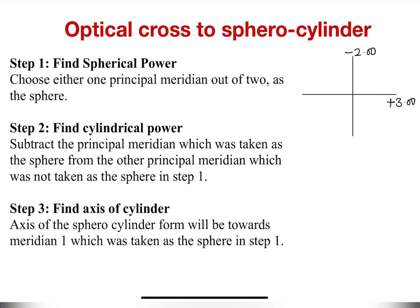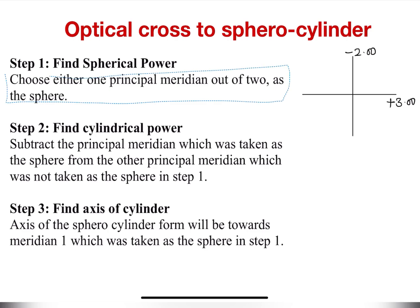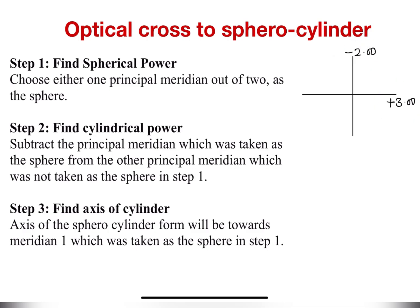So how can we convert our optical cross to the sphero-cylindrical form? Step one is to find the spherical power. To find the spherical power, we're going to choose either one of the principal meridians as our sphere. In our case, we're going to choose plus three as the spherical value.